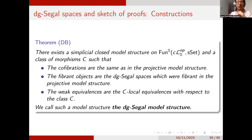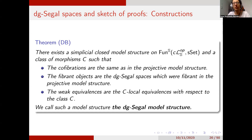One of the reasons why it is interesting to use this point of view is that it is easy to find a model structure. Once we have gotten the right definitions, getting a model structure is relatively straightforward — we just do a left Bousfield localization. There exists a simplicial model structure whose fibrant objects are exactly the DG Segal spaces, and we call it the DG Segal model structure.